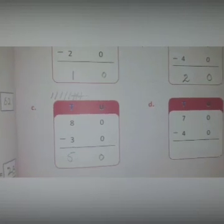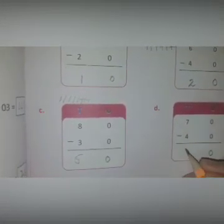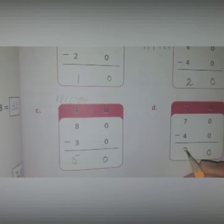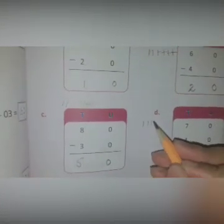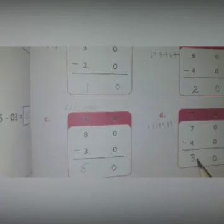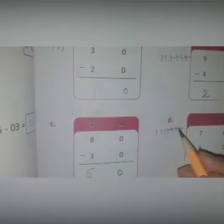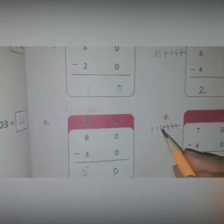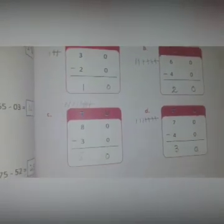Part d: 0 from 0 is equal to 0. 7 from 3 is equal to 4. Mark seven lines here and cut four lines — the remaining are one, two, three. Write the answer three. The answer is 30.